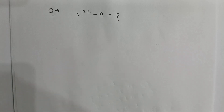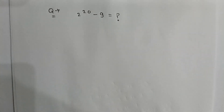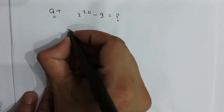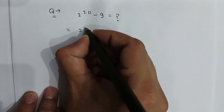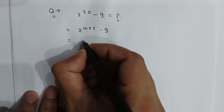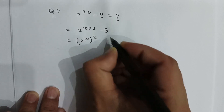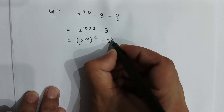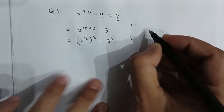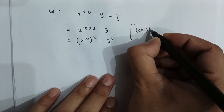The problem is 2 to the power 20 minus 9. It is looking like a very large number, but we will solve it in a very easy method. It can be written as 2 to the power 10, multiplied by 2, minus 9, which is the same as 2 to the power 10, whole squared, minus 9. And 9 can be written as 3 squared.